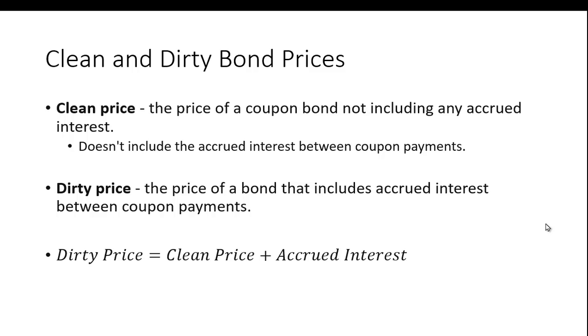When we usually do these calculations in a finance class or from a textbook, we're usually calculating the clean price. We're just looking at the present value of the coupons plus the present value of the face value. But when you're buying a real bond, you're not necessarily buying it right on that day the coupon will be paid. You're usually buying it between interest payments.